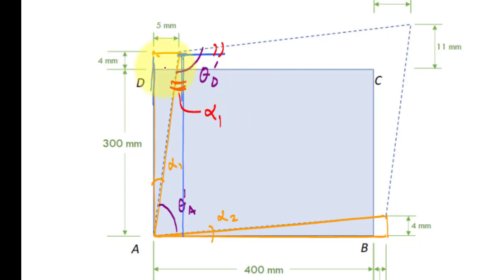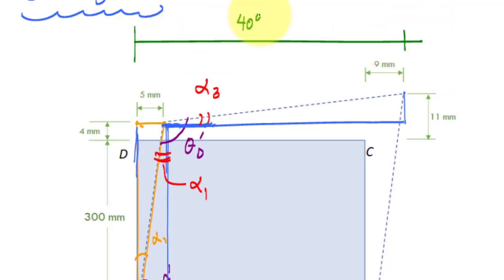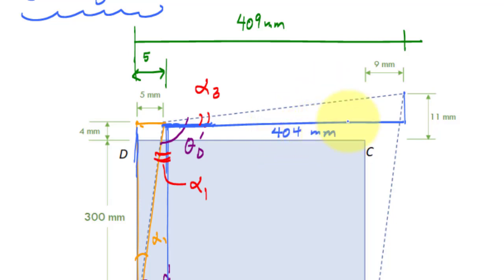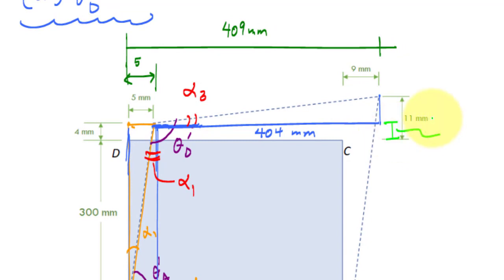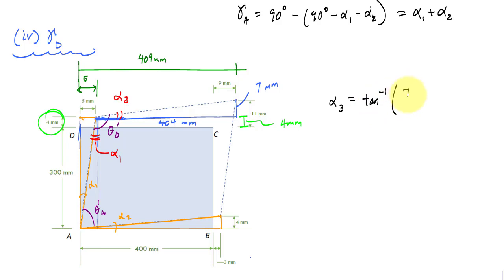I'll call the second angle alpha 3. The horizontal leg of the right triangle is 409 minus 5, which is 404 millimeters. The vertical leg: point C moved up 11 millimeters, and this height is 4 millimeters, making the vertical leg 7 millimeters. Therefore, alpha 3 equals tan inverse of 7 over 404, which equals 0.993 degrees.